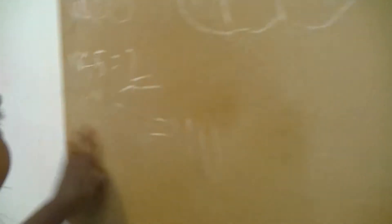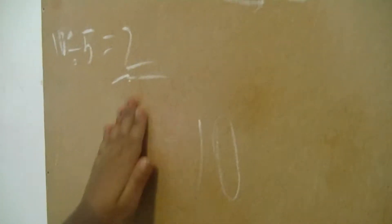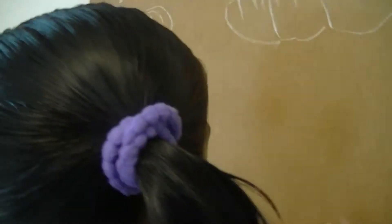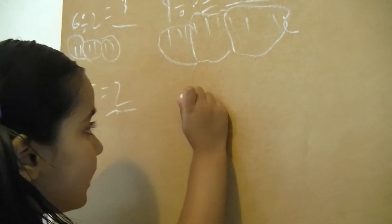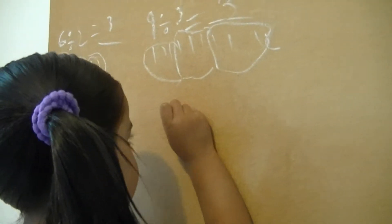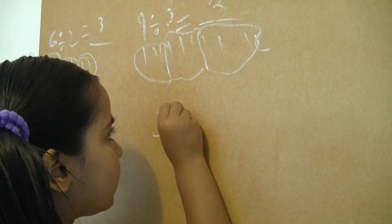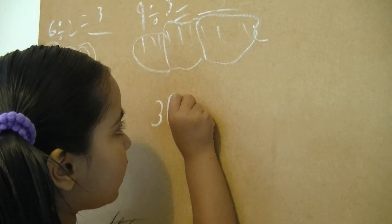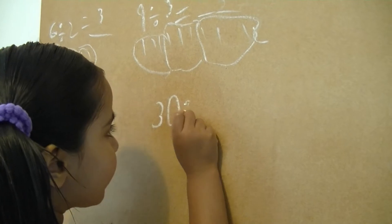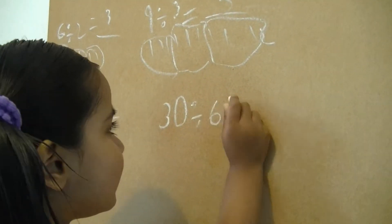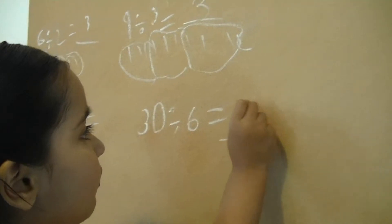Very good. Could you do thirty divide six? That was a good explanation. Thirty divide six makes five.